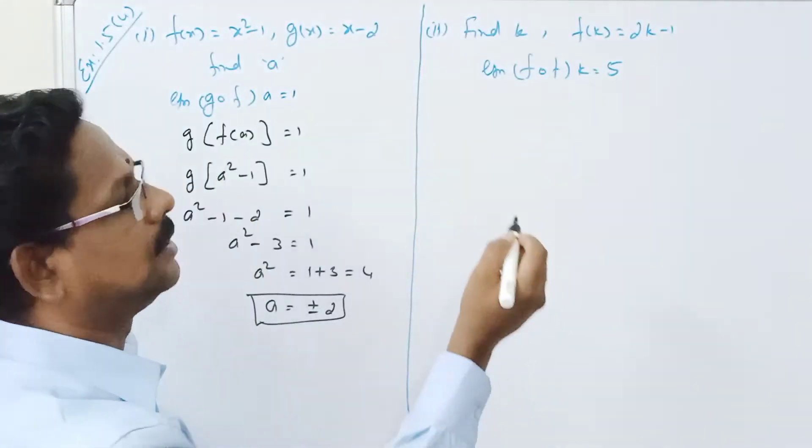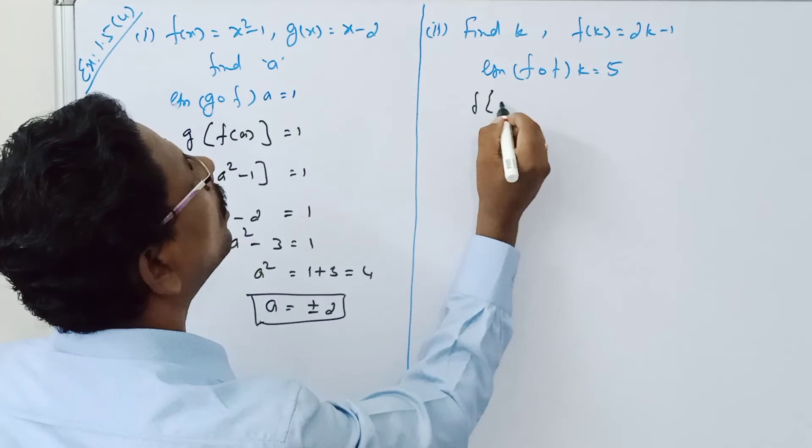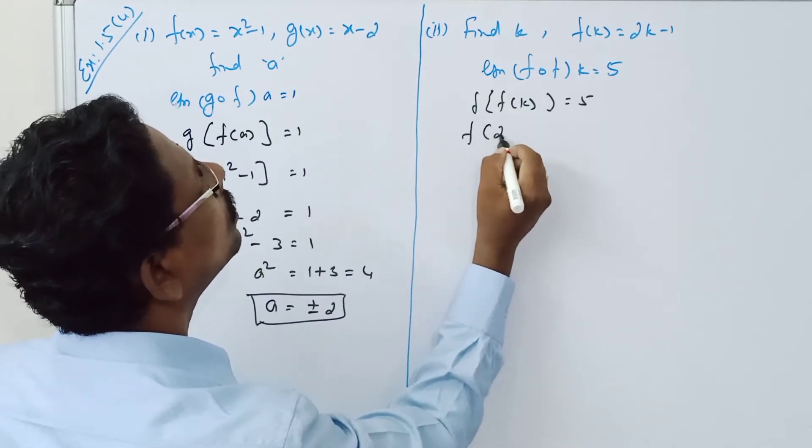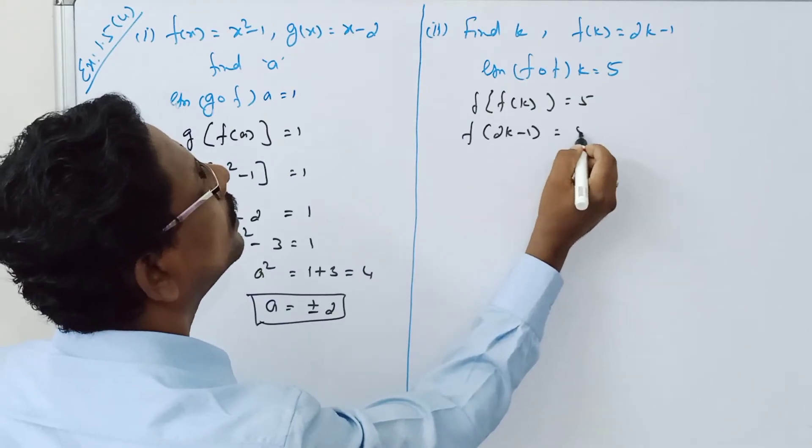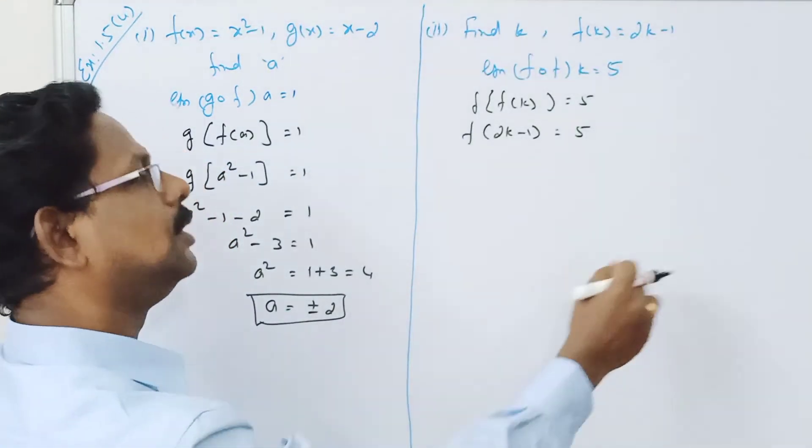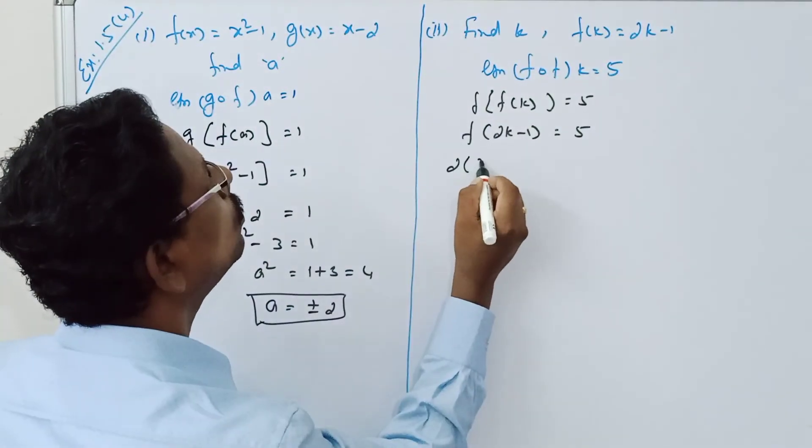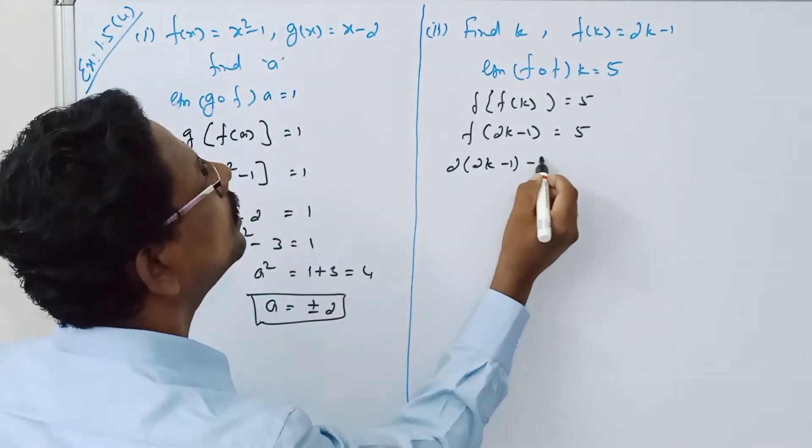Now using f of k, if f of k equal to 5, then f of 2k minus 1 equal to 5. So 2 into 2k minus 1 minus 1 equal to 5.